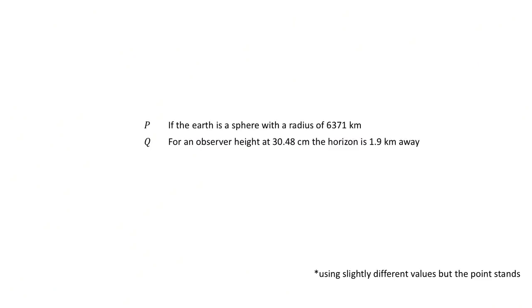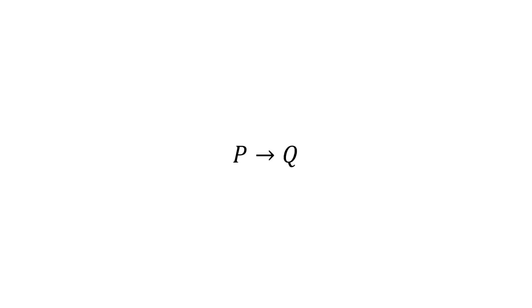If we take the statement that if the Earth is a sphere with a radius of 6,371 kilometers, then at an observer height of 1 foot — or 30.48 centimeters for those who are sensible — the horizon should be 1.9 kilometers away. This is a simple if P, then Q statement. We then observe that the horizon is clearly farther than 1.9 kilometers away, and we can then conclude that the initial statement is incorrect.